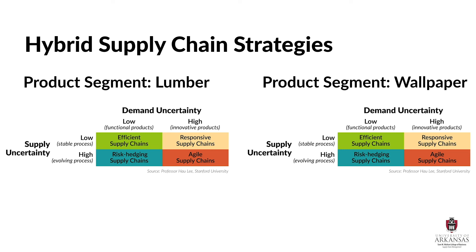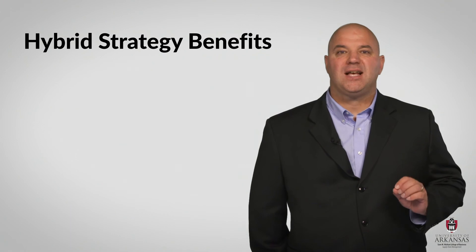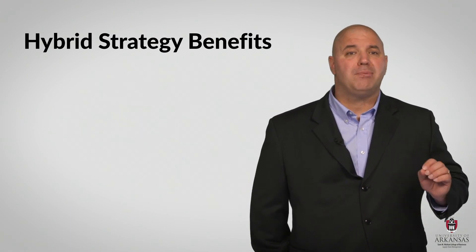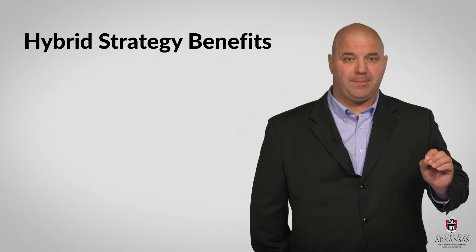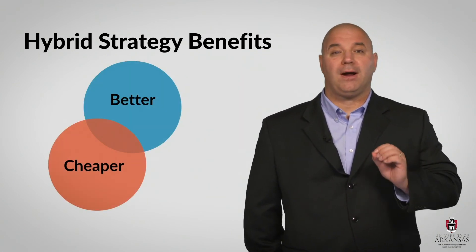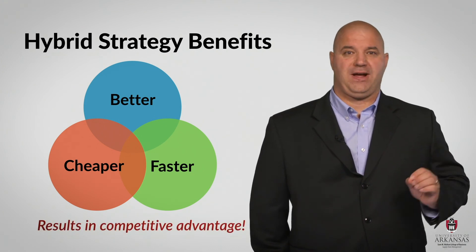Lowe's needs to carefully segment their products based on supply uncertainty and demand uncertainty characteristics. Then they need to align each segment with the appropriate quadrant in Professor Lee's uncertainty matrix. This means Lowe's will need more than one type of supply chain strategy to meet the diverse needs of their broad customer base. But if Lowe's successfully segments their products and implements the right hybrid strategies, then they will meet the unique needs of each product segment in a better, cheaper, and faster manner that results in competitive advantage.